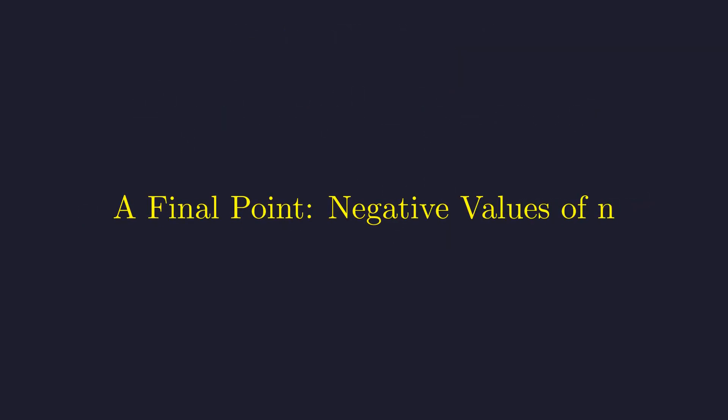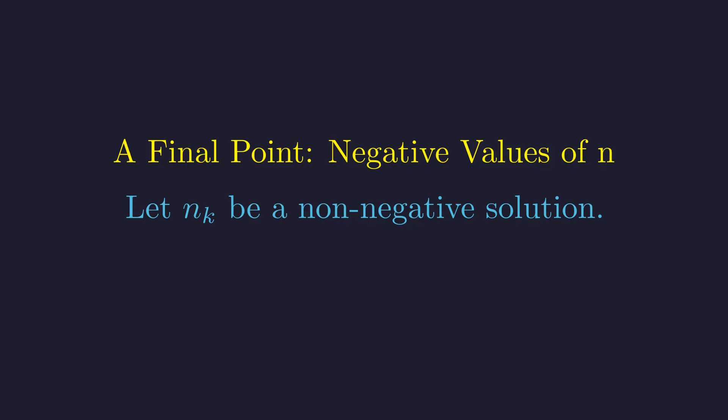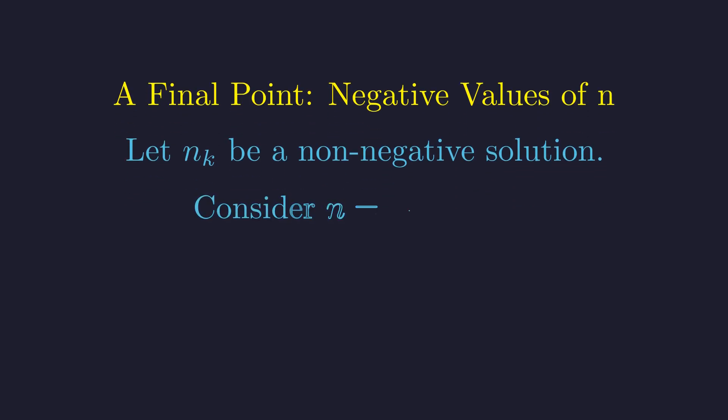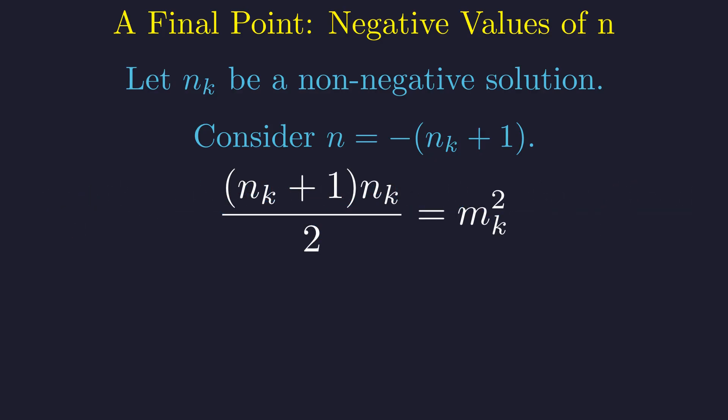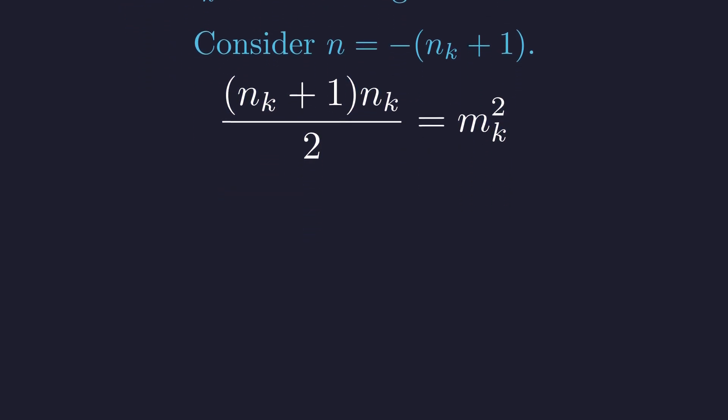The problem asks for all integer solutions. We must consider negative values for n. Suppose n sub k is one of the non-negative solutions we found, like 8. Let's examine a new value, n equals the negative of n sub k minus 1. Substituting this into the triangular number formula, the two negative factors in the numerator will cancel each other out. This leaves us with the exact same expression for the nth triangular number, which we already know is a perfect square.